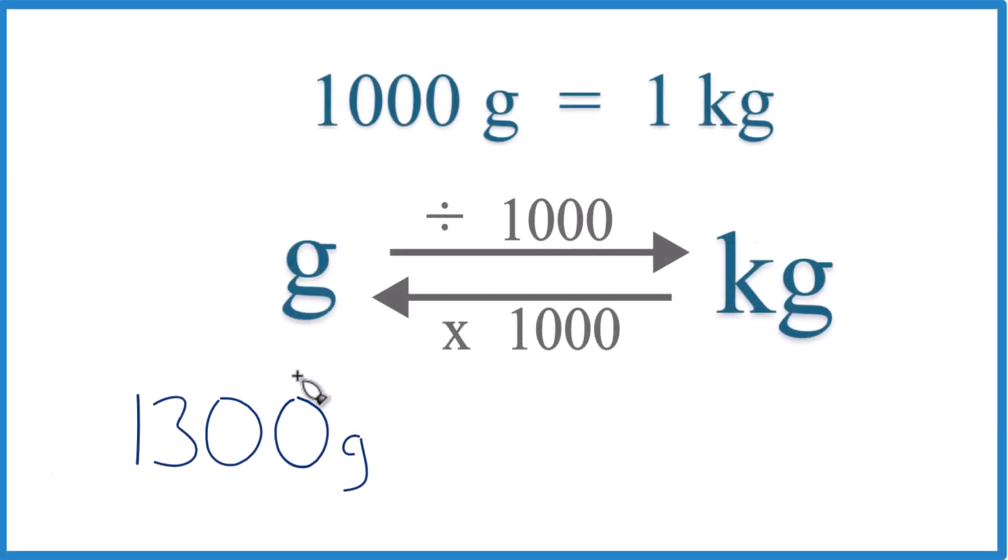If you're asked to convert 1,300 grams to kilograms, here's how you can do that. You need to know that there are 1,000 grams in one kilogram. This right here, this is our conversion factor.